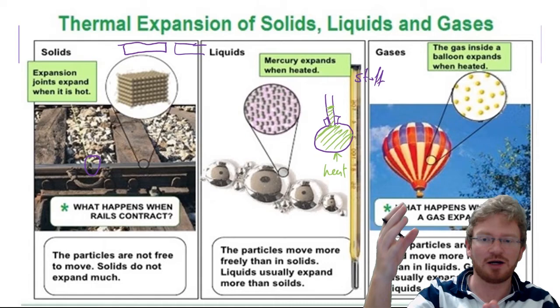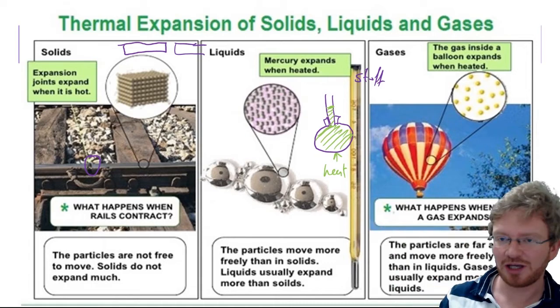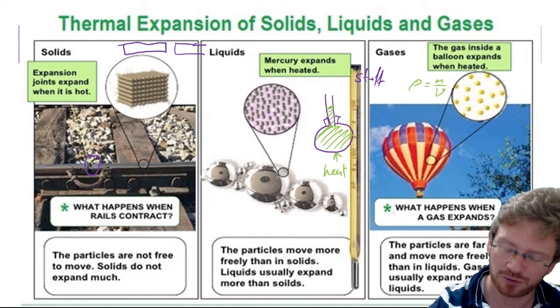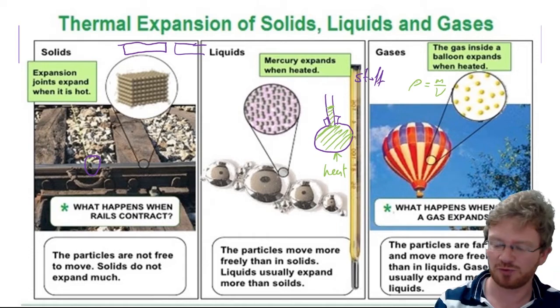And the last one is the idea of hot air balloons. Hot air balloons are really cool, and they relate a little bit to density. So, remember, we said density, which is that symbol rho, is mass divided by volume. And they also relate to floating and sinking.